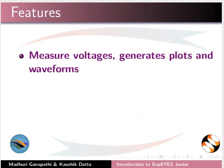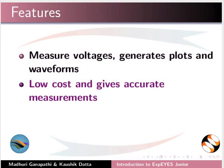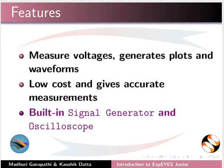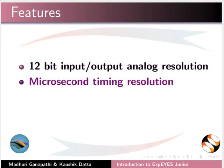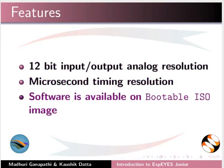Here is a list of some important features of Xpice Junior. The device can measure voltages, generate plots and waveforms. It is low cost and gives accurate measurements. The device has a built-in signal generator and oscilloscope. It has 12-bit input-output analog resolution and microsecond timing resolution. Software is available on a bootable ISO image.